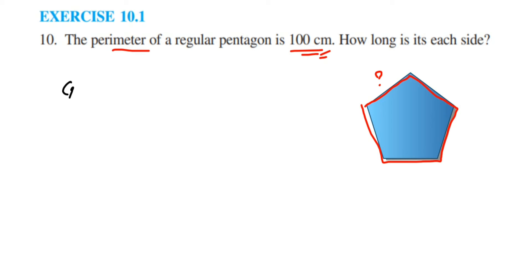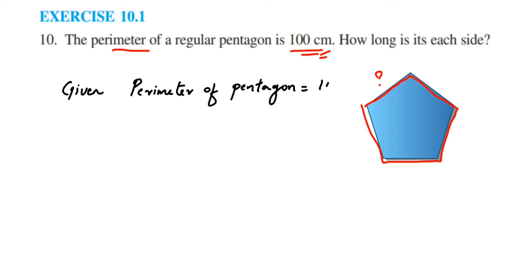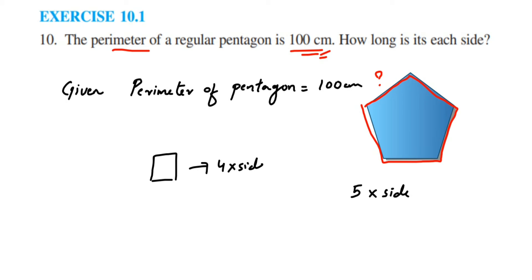The perimeter of the pentagon is equal to 100 centimeters. Now what is the formula for the perimeter of a pentagon? Just like we learned the perimeter of a square and rectangle — since all sides of a regular pentagon are the same and there are 5 sides total, the formula becomes 5 times side. It's similar to a square, where all sides are equal, so the perimeter is 4 times side, instead of adding side four times. Similarly, for a pentagon with 5 equal sides, the formula is 5 times side.